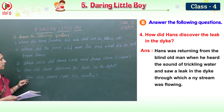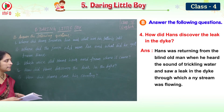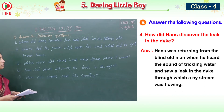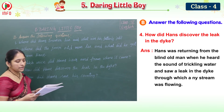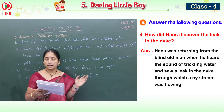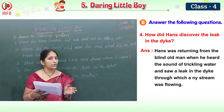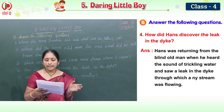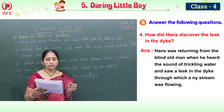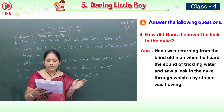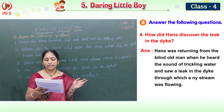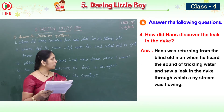The fourth question: how did Hans discover the leak in the dike? Hans was returning from the blind old man when he heard the sound of trickling water and saw a leak in the dike through which a tiny stream was flowing.